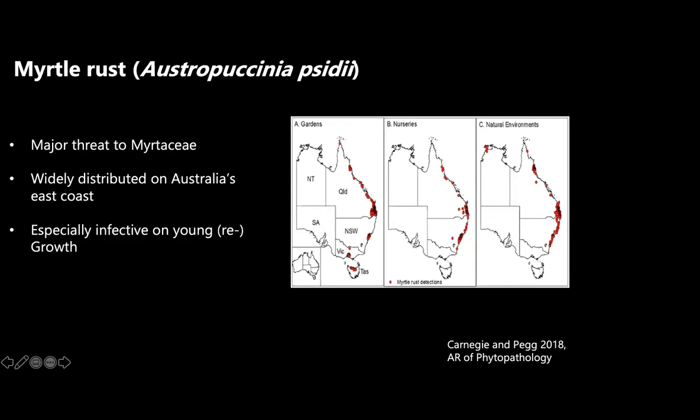What's also peculiar about myrtle rust is that it can affect regrowth. Especially after fire, there is a real risk that the pathogen can infect particularly regrowing and rejuvenating plant material.